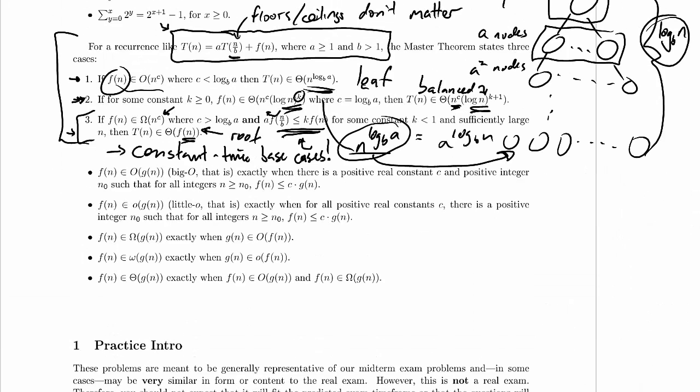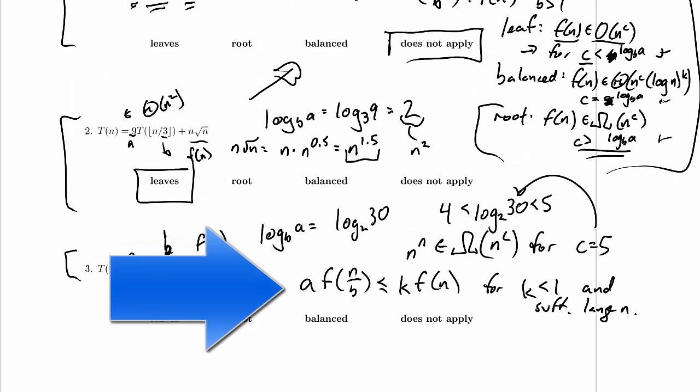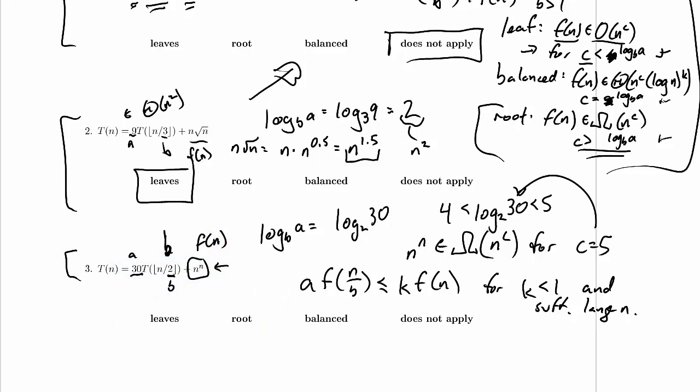So the regularity condition tells us that a times f of n over b has to be less than or equal to k times f of n for some constant k less than 1, and sufficiently large n. So I'm just going to copy that. What does sufficiently large n mean by the way? Same thing as usual, it basically means for all n greater than n0, where n0 is some constant. Okay, so what is a? a is 30. So 30 times f of n over 2 has to be less than or equal to k f of n, for k less than or equal to 1. Well, f of n over 2, that's n over 2 to the n over 2, that is tremendously smaller than n to the n.